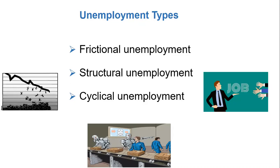The natural rate of unemployment is the unemployment rate that occurs as a normal part of the functioning of the economy. It is sometimes taken as the sum of the frictional and structural unemployment rates.